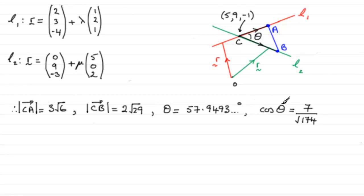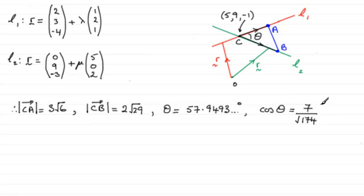Or the cosine of theta, if you look back, was exactly 7 over root 174. Now if we're to find the area of this triangle ACB, we can do it two ways. We can either get an approximate answer or we can go for the accurate answer. The approximate answer would be using this angle here. The exact value would be using this. And I'll show you both methods.